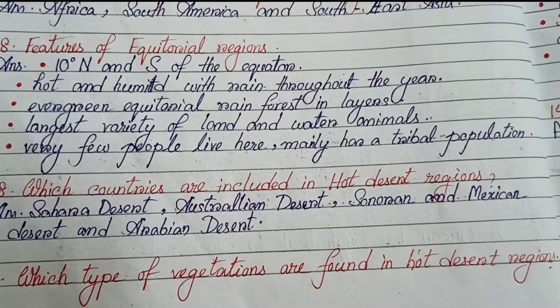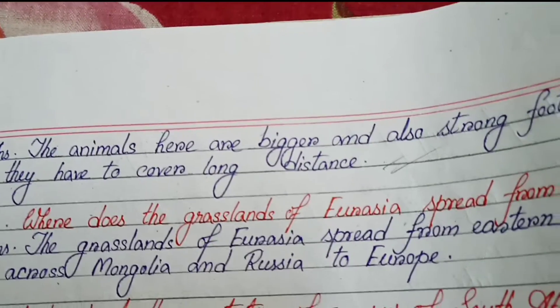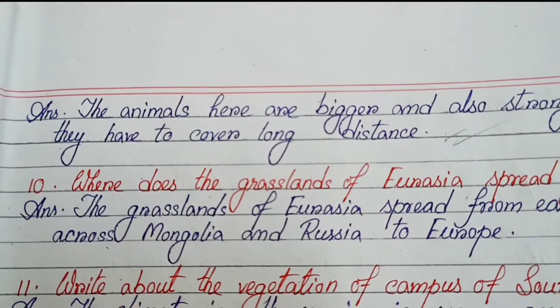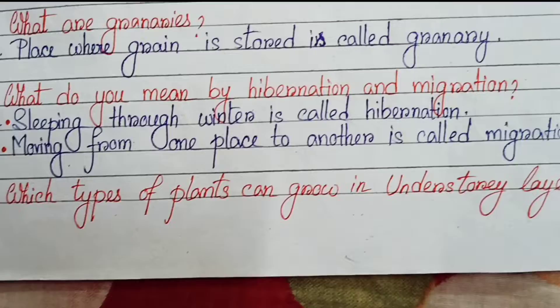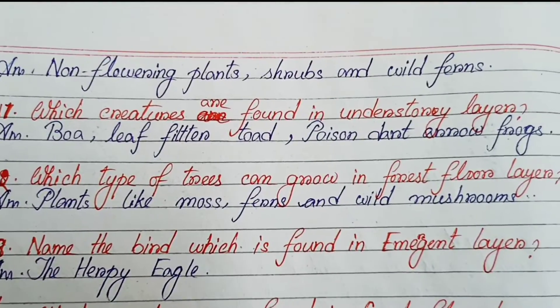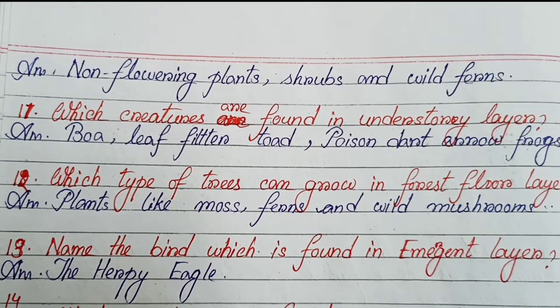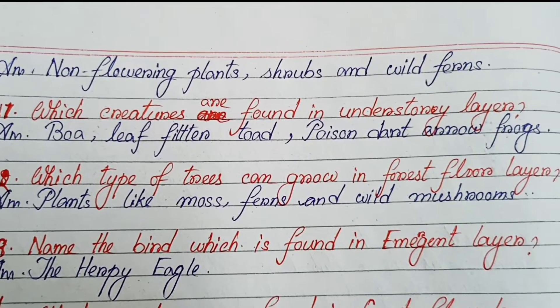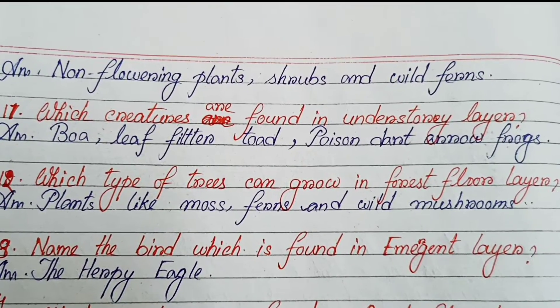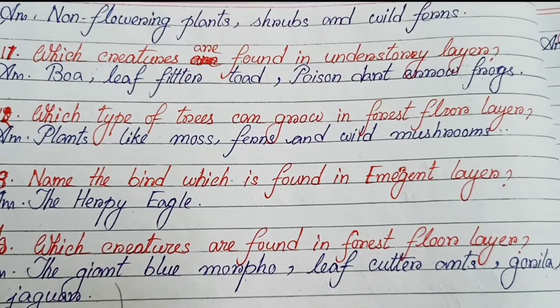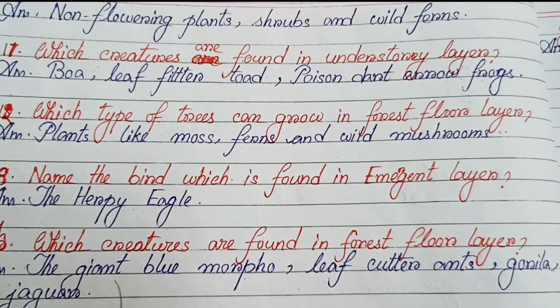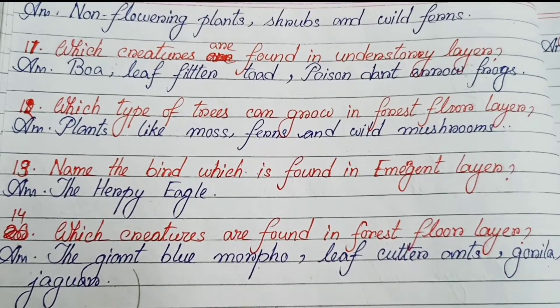Which countries are included in the hot desert region? The Sahara Desert, Australian Desert, Sonoran and Mexican Desert, and Arabian Desert. Number 9: Which type of vegetation is found in hot desert regions? Number 10: Which type of plants can grow in the understory layer? Non-flowering plants, shrubs, and wild ferns. Which creatures are found in the understory layer? Boa, leaf-tailed gecko, and poison dart frogs.